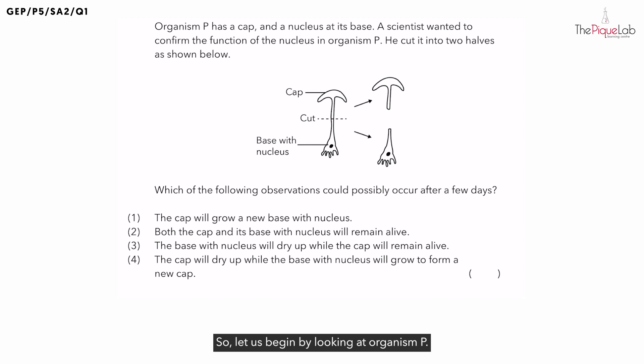Let us begin by looking at organism P. We see that it has been cut into two halves. What is the difference between both halves? We see that the base contains the nucleus while the cap does not. So, let us write that down. The cap has no nucleus while the base has a nucleus present.